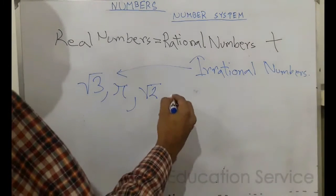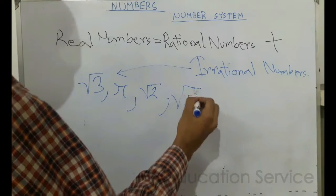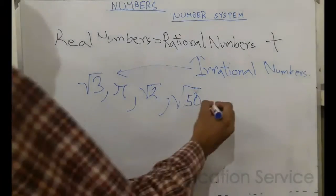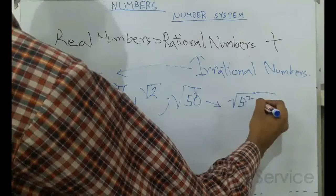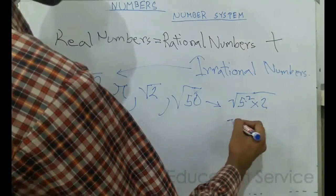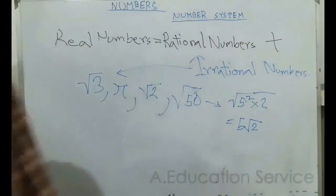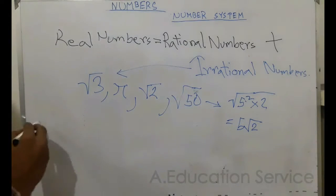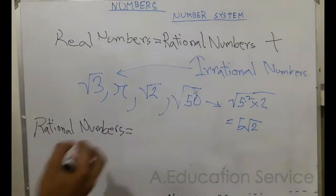Root fifty is also an irrational number because root fifty simplifies to five root two. Rational numbers are numbers that are not irrational. Rational numbers include integers and fractions.